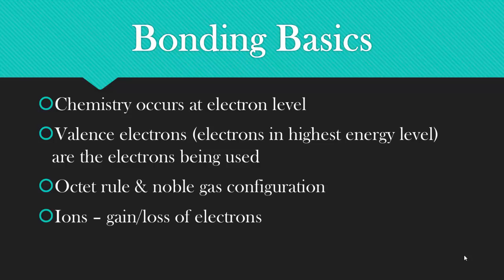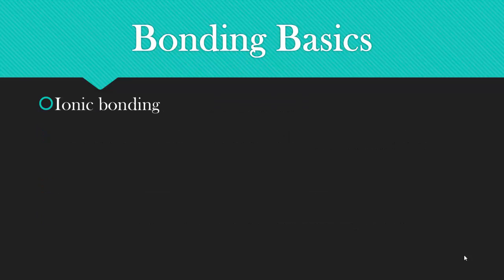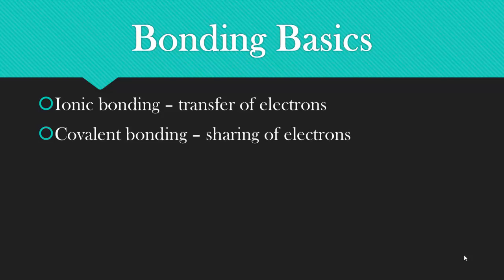Ions form when you gain or lose electrons, so the protons do not equal the electrons. In ionic bonding, you transfer electrons, you make ions, opposite charges attract. In covalent bonding, you share electrons, and there is no formation of ions.